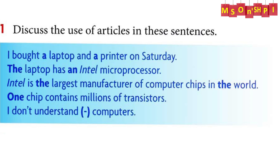We use An before words which start with vowel sounds. Intel is the largest manufacturer of computer chips in the world — the definite article is used with a superlative adjective and to refer to the world, the only one. We use the definite article, the, before nouns that are only one: the world, the sun, the moon, and so on. One chip contains millions of transistors — one is used to specify a number.